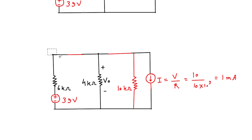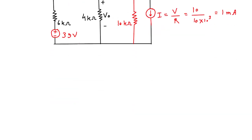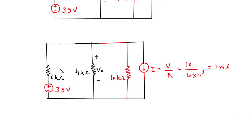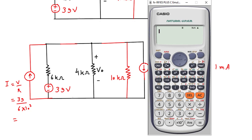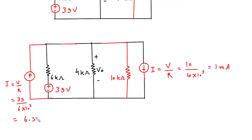Now again we will convert this voltage source into its equivalent current source. We will draw a current source. The direction of this current source will be upward because of the polarity. Again I = V/R: the value of voltage is 39, so 39 divided by 6 kilo ohm = 39 / (6 × 10³) = 6.5 milli ampere. We will erase this voltage source now.